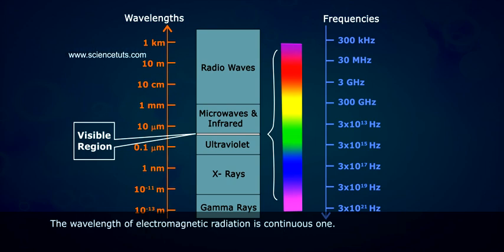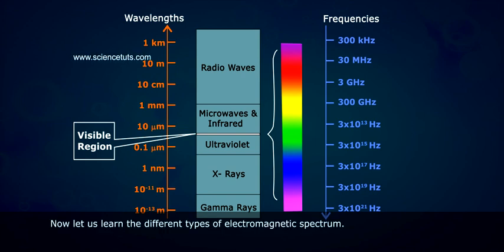The wavelength of electromagnetic radiation is a continuous one. Now, let us learn the different types of electromagnetic spectrum.